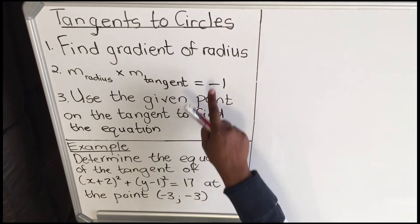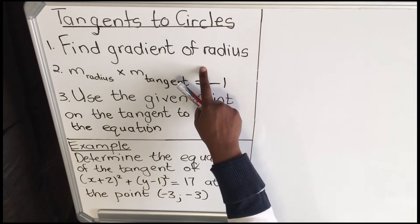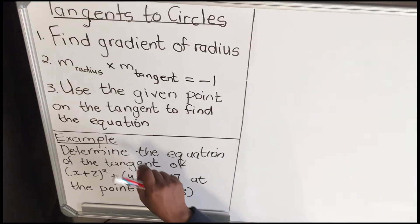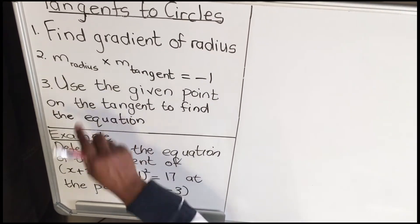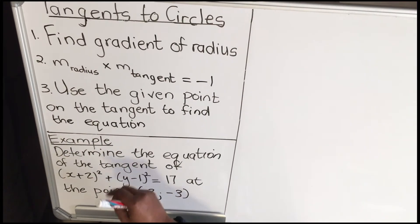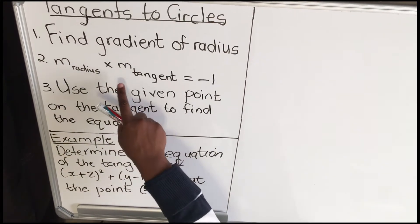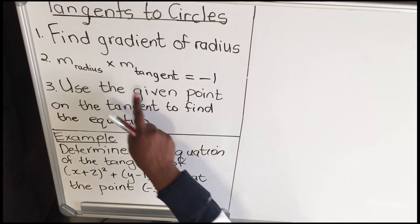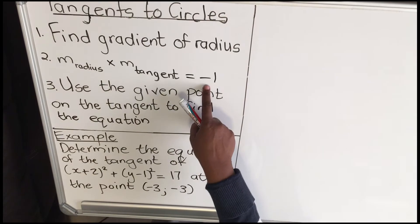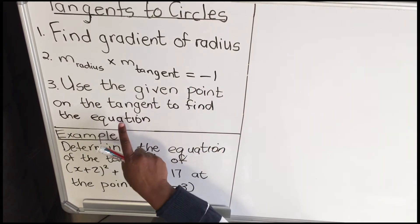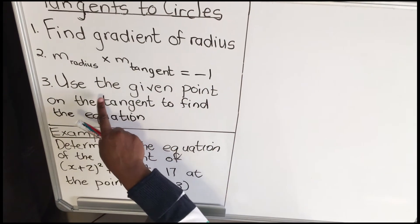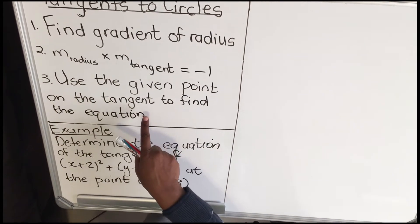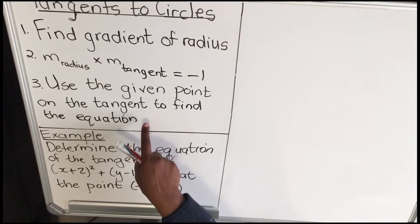Now you remember that when you have two lines that are perpendicular, the product of those gradients — if you multiply them — you get negative one. So you're going to use that concept, and then you're going to use the point that you are given to find the equation of the tangent.